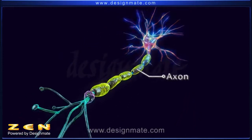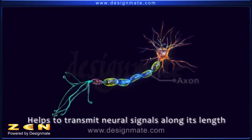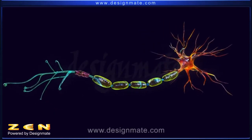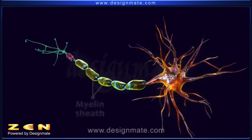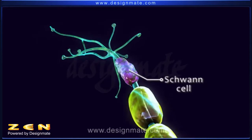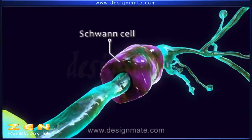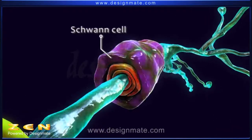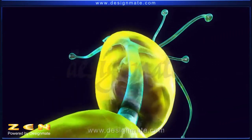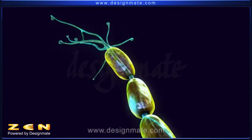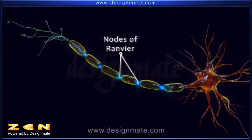The axon is long and helps to transmit neural signals along its length. It is covered intermittently by a fatty substance called the myelin sheath. On the axon, we observe a Schwann cell wrapped around it. The Schwann cells begin to secrete layers of fatty deposits known as myelin. There are gaps with no myelin sheath, and these gaps are known as the nodes of Ranvier.